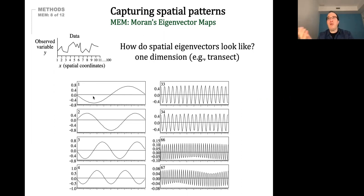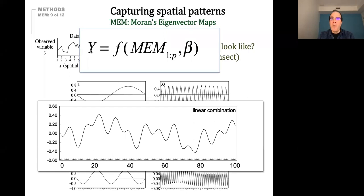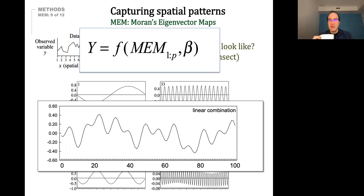Moran's eigenvector maps can also be built from very complex sampling designs that do not conform to a uniform design — either as 1D in a transect or 2D as in a lattice. They have been used even in 3D, sampling vertically in many problems like birds in flight. When you combine them — say you have a response variable like genetic data and you model it as a function of those eigenvector maps — you can combine them in a linear way and they can actually represent very complex variation in time or space.